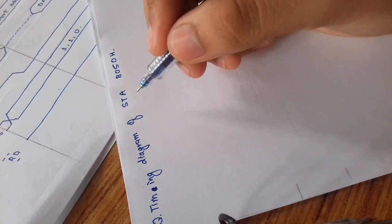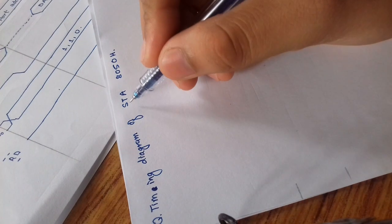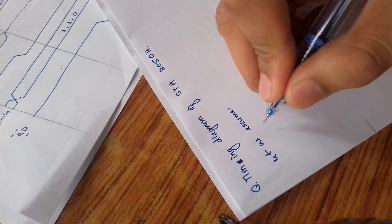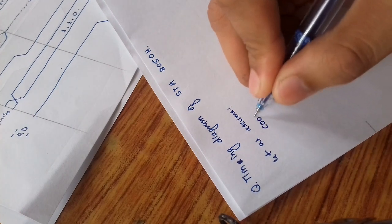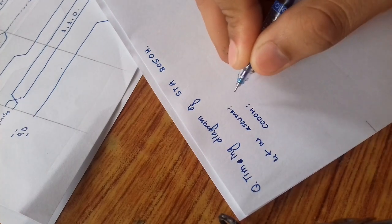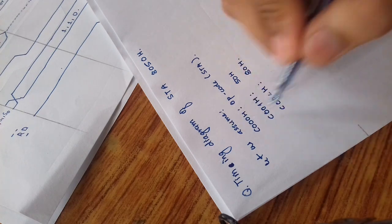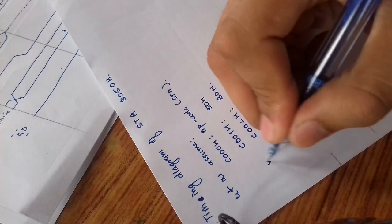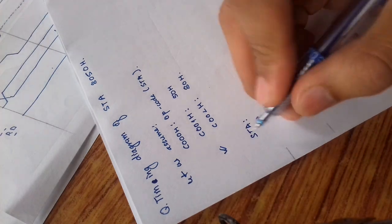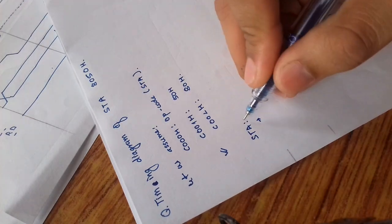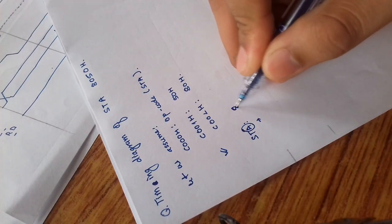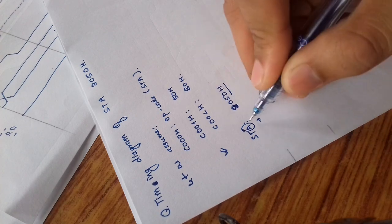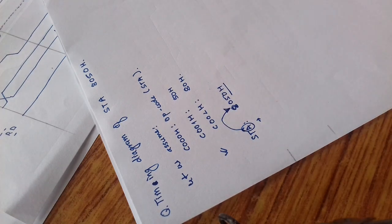In this video we will make a timing diagram of STA 8085. We assume that the operation code is at a specific address. The STA command writes the content of the accumulator to the desired address, which is 8085 in our case. The content of the accumulator is copied to that address.